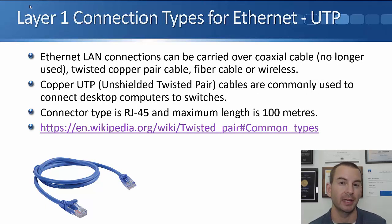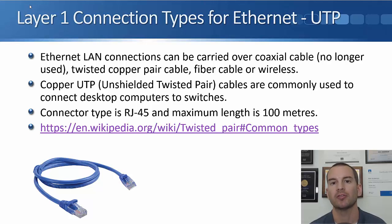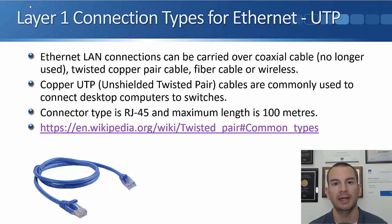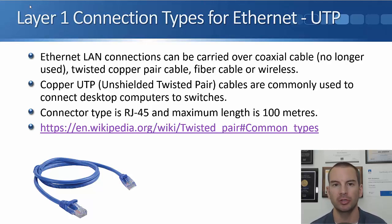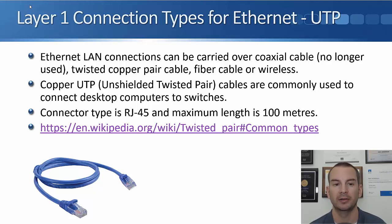In this lecture, just like in the last one, we're going to focus on the local area network, so we're going to be focusing on Ethernet again. We'll cover wide area networking in a later section. Ethernet LAN connections can be carried over coaxial cable, which was the original implementation but is no longer used. What we have nowadays are twisted copper pair cable, fiber optic, or wireless.